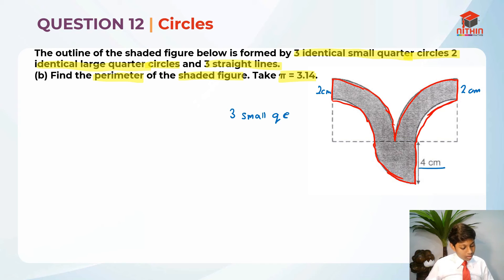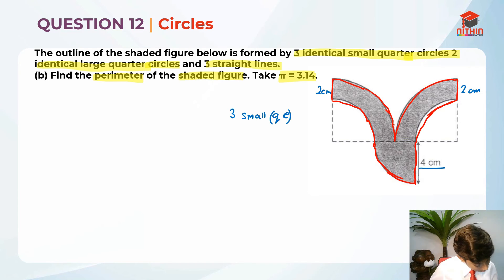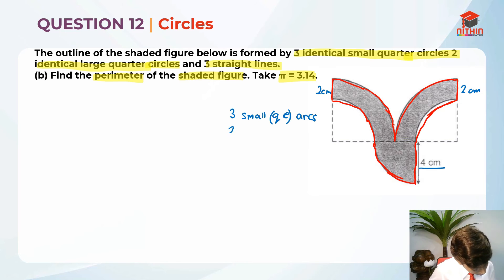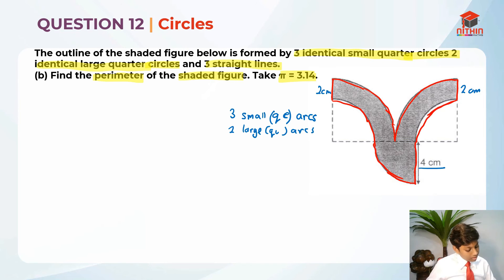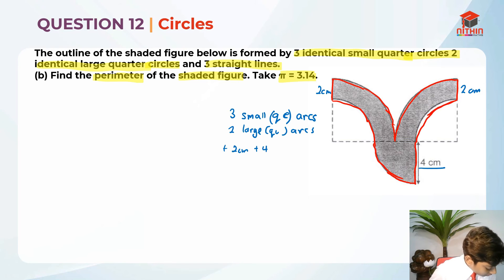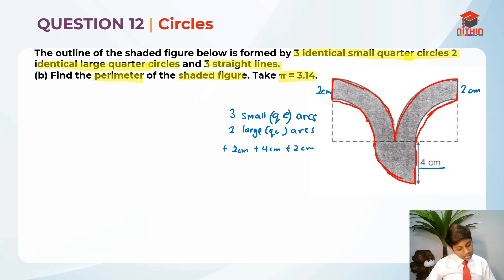So we need to find 3 small QC arcs and 2 large QC arcs, then add 2cm plus 4cm plus 2cm. This is basically the perimeter. So we first find the arc of the small quadrant — quadrant means quarter circle.